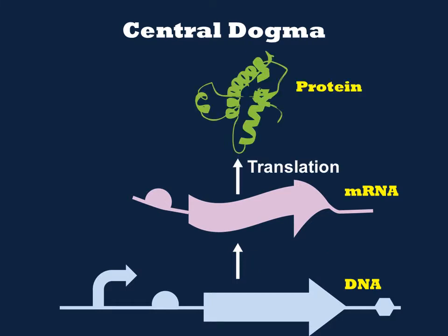The mRNA sequence is the template for construction of protein during translation. The genetic code for converting the mRNA sequence to the protein sequence is a simple lookup table in which each amino acid of the protein is encoded by consecutive triplets of DNA or RNA code.